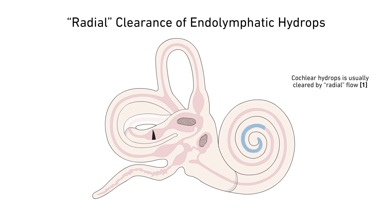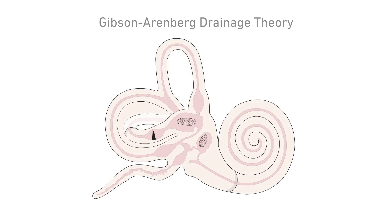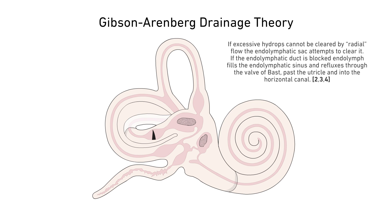Experiments in guinea pig ears imply that apical cochlea hydrops is usually cleared locally by radial flow. Longitudinal flow towards the endolymphatic sac occurs when radial clearance is insufficient. If excessive hydrops cannot be cleared by radial flow, the endolymphatic sac attempts to clear it.